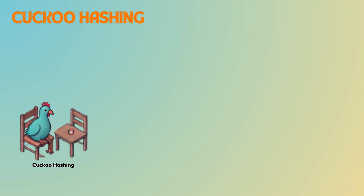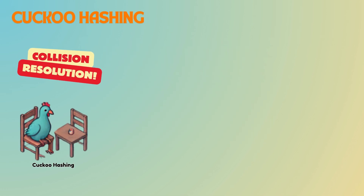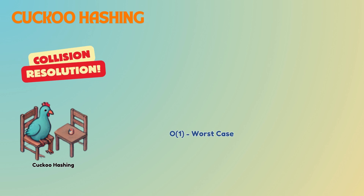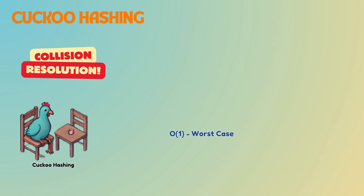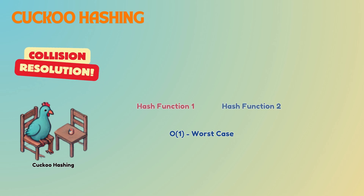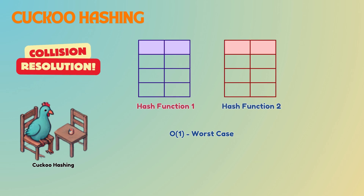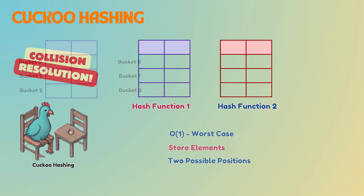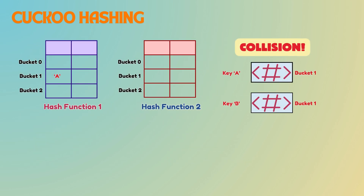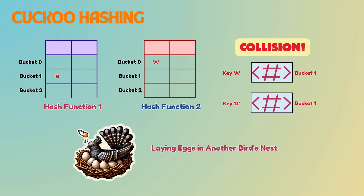Cuckoo hashing is a collision resolution strategy for hash tables that offers O(1) worst-case time complexity for lookups. This approach uses two hash functions and two tables to store elements, ensuring that each key is placed in one of two possible locations. If a key is already occupying one of these locations, it gets kicked out — just like a cuckoo bird laying its eggs in another bird's nest.